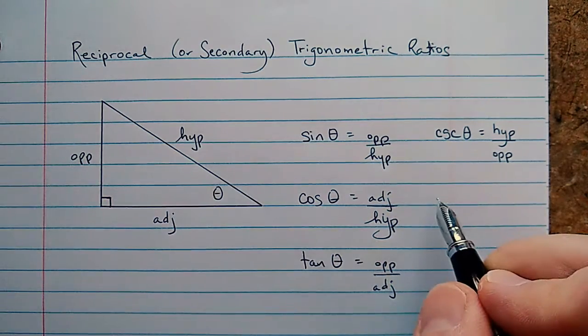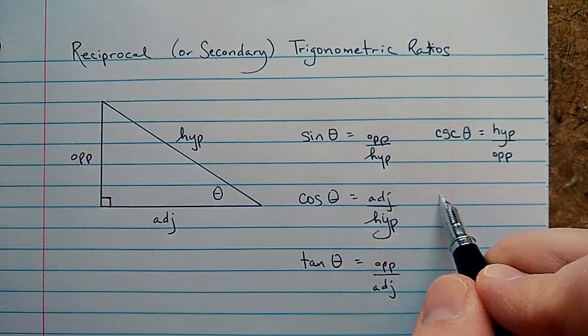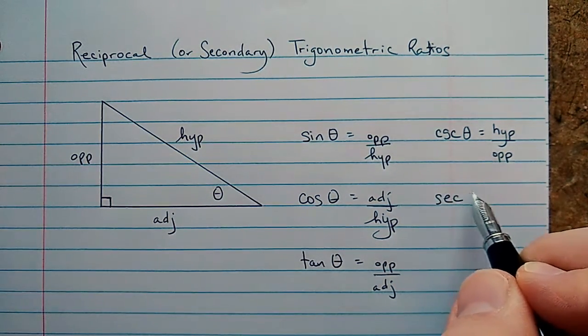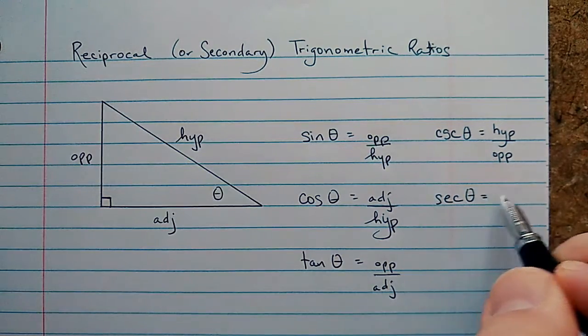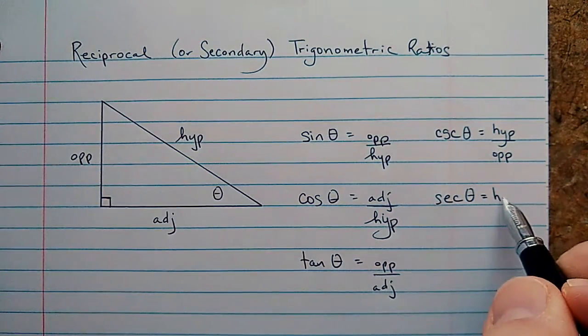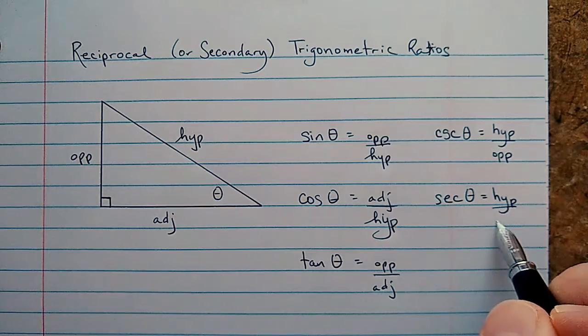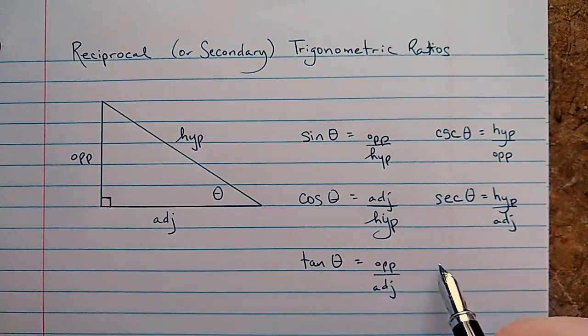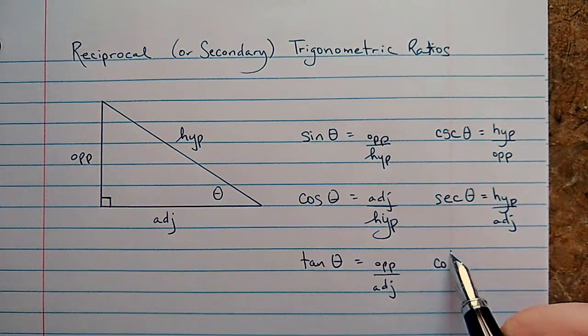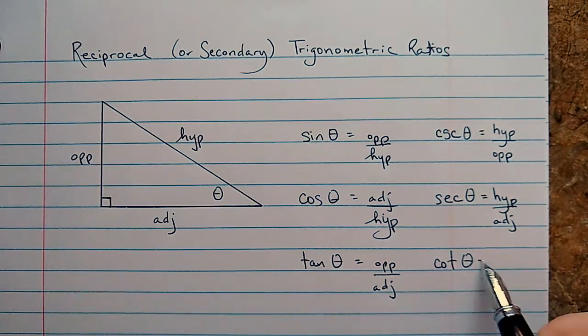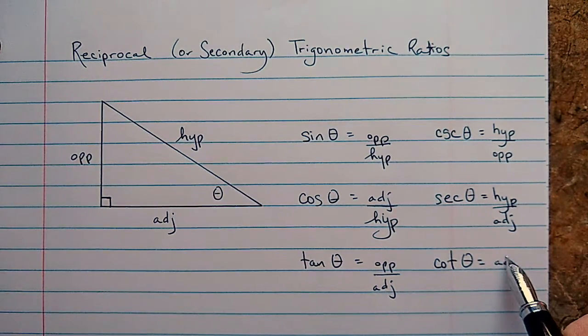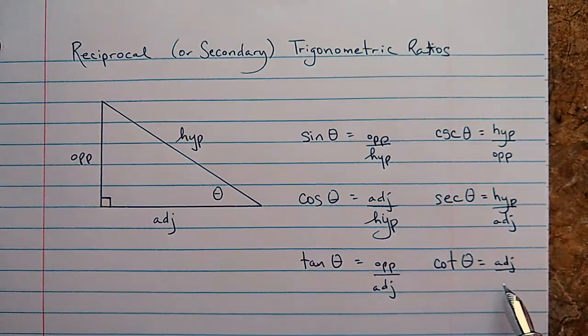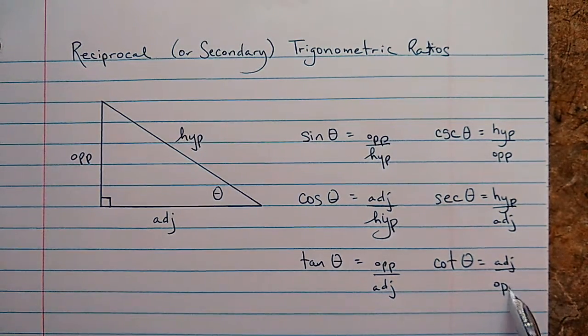Along with the cosine function, we have the secant function. And it's going to be similar, the hypotenuse divided by the adjacent side length. And along with tan, we have one called the cotangent, C-O-T. And it's the adjacent side length divided by the opposite side length.